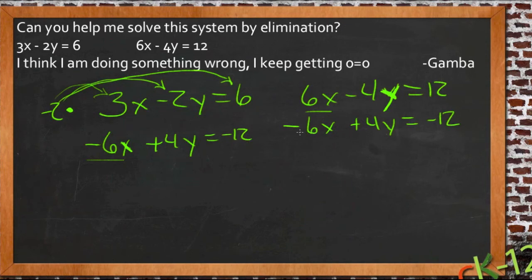So we get 6x plus negative 6x, that's 0, plus negative 4y plus 4y, that's another 0, equals 12 minus 12, which is another 0. So yeah, obviously this is what he kept coming up with, and I certainly agree. 0 equals 0 is sort of your final solution there.